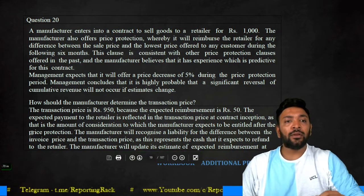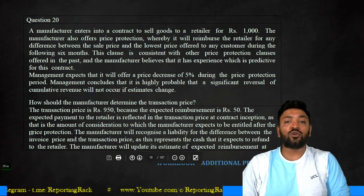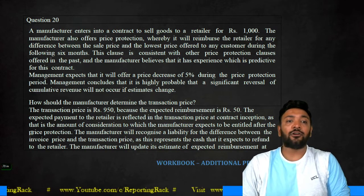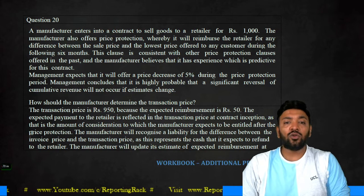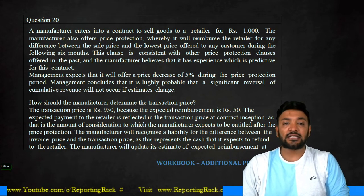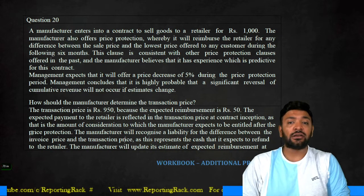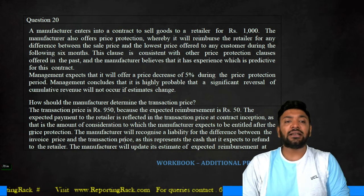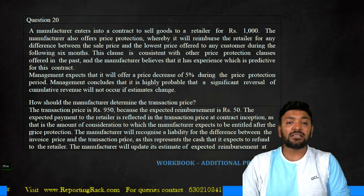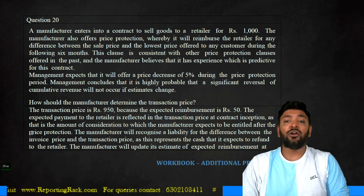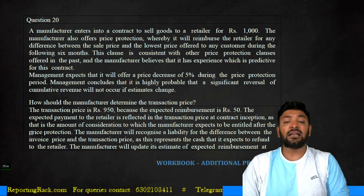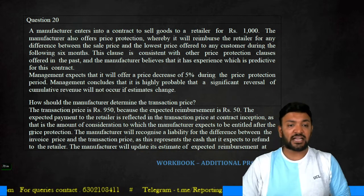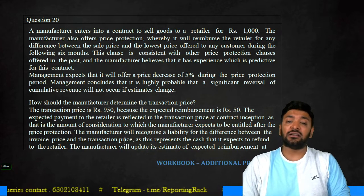Let's continue with question number 20. A manufacturer enters into a contract to sell goods to a retailer for 1000 rupees. The manufacturer offers a price concession whereby it will reimburse the retailer for any difference between the sale price and the lowest price offered to any customer during the following six months. This clause is consistent with other price protection clauses offered in the past. The management expects a price decrease of 5% during the price protection period and concludes it is highly probable that a significant reversal of cumulative revenue will not occur if the estimate changes. How should the manufacturer determine the transaction price?